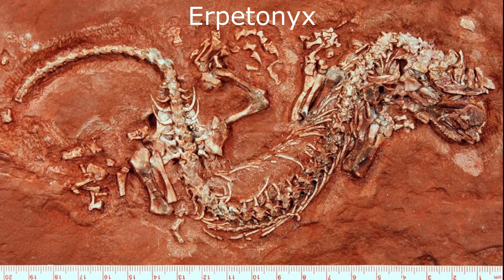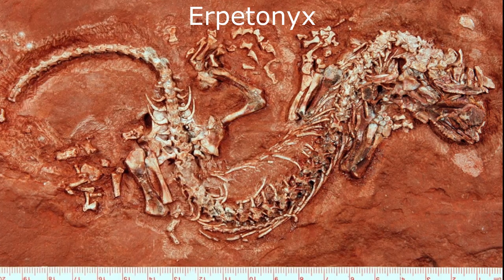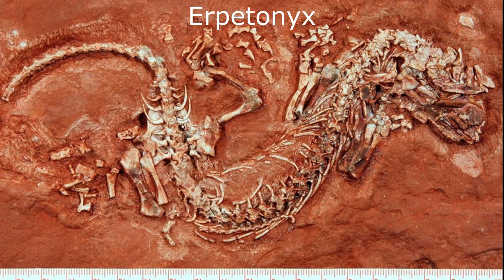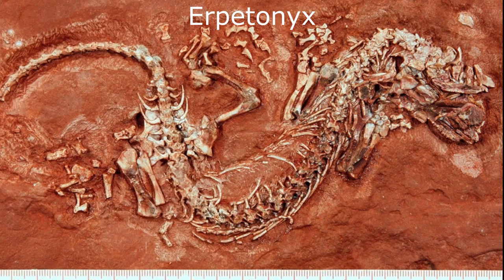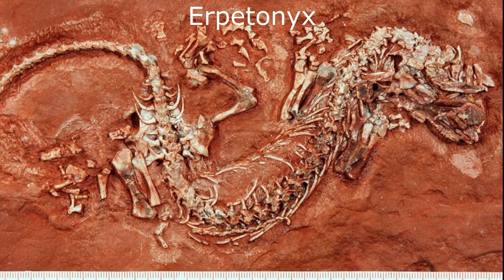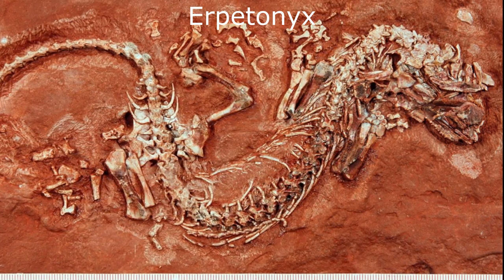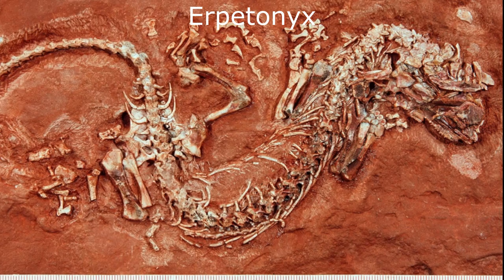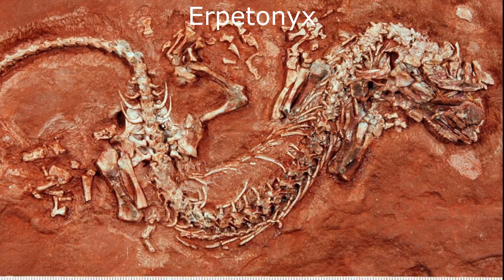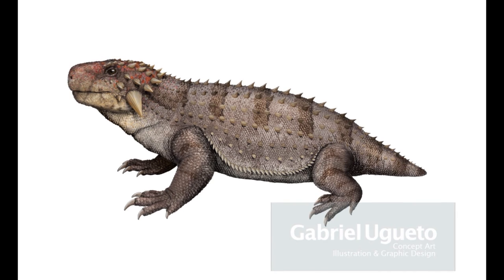An unusual sister genus of Bolosauridae, the Canadian Ereptonics, is the second oldest parareptile behind only Carbonodraco, found in rocks dated to between 303 and 298 million years ago. Unlike the Bolosaurids, this animal was a carnivore or insectivore, with sharp conical teeth associated with the holotype.